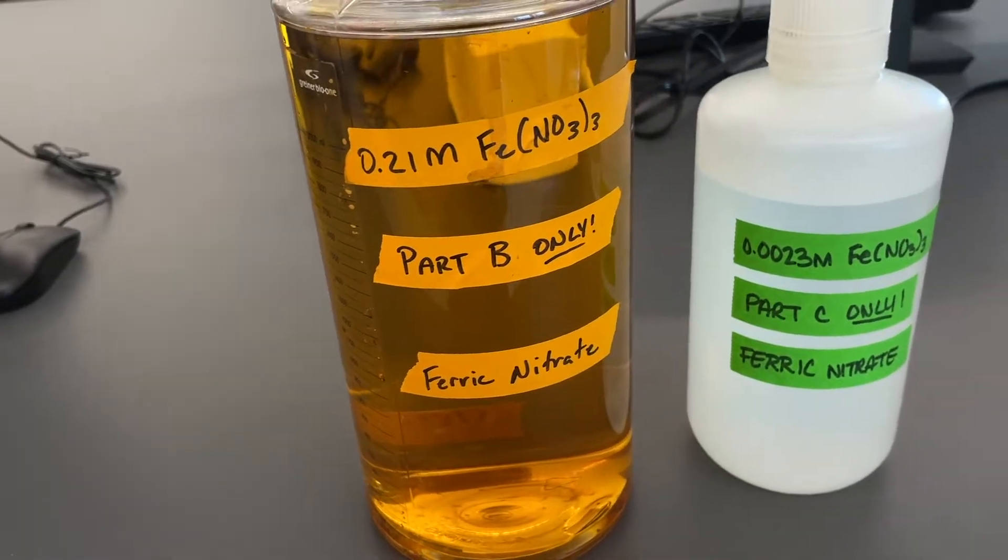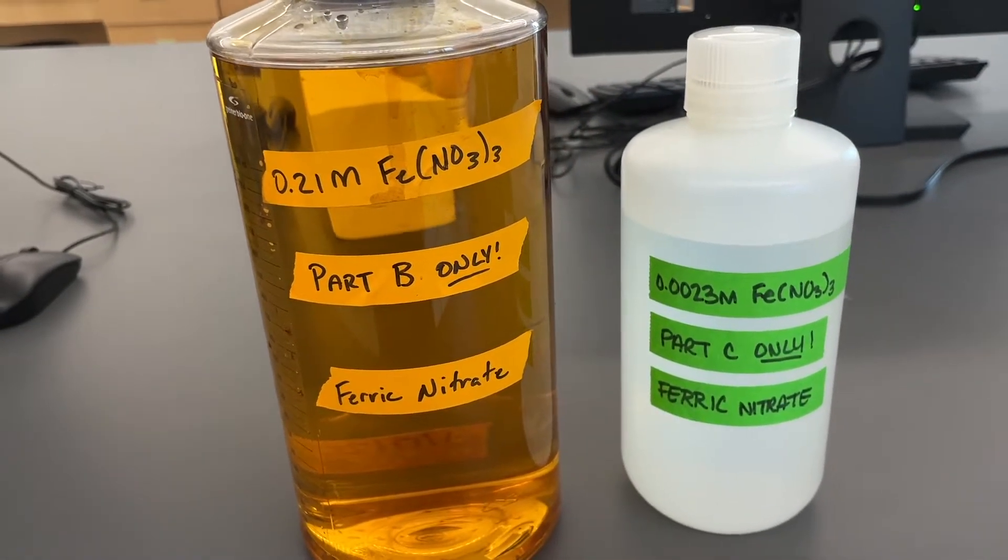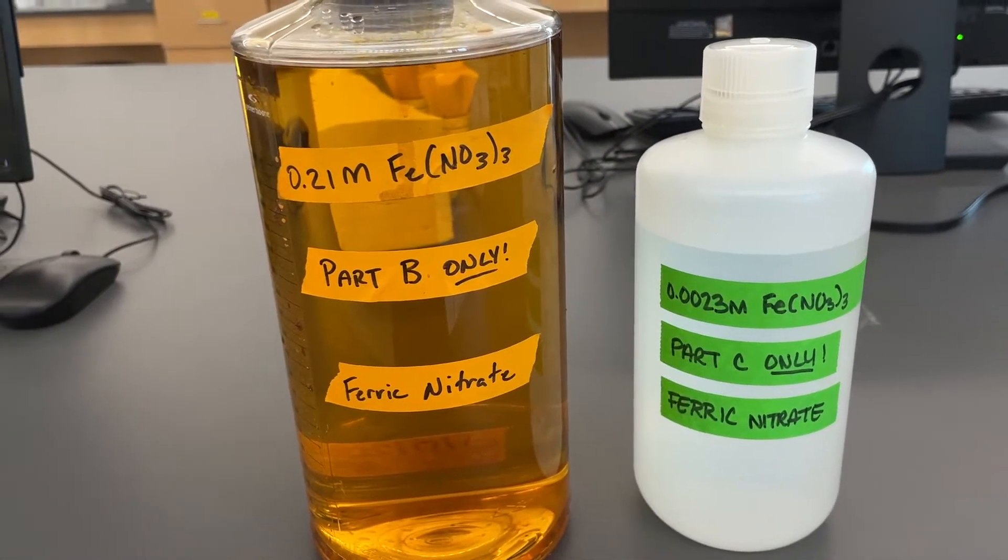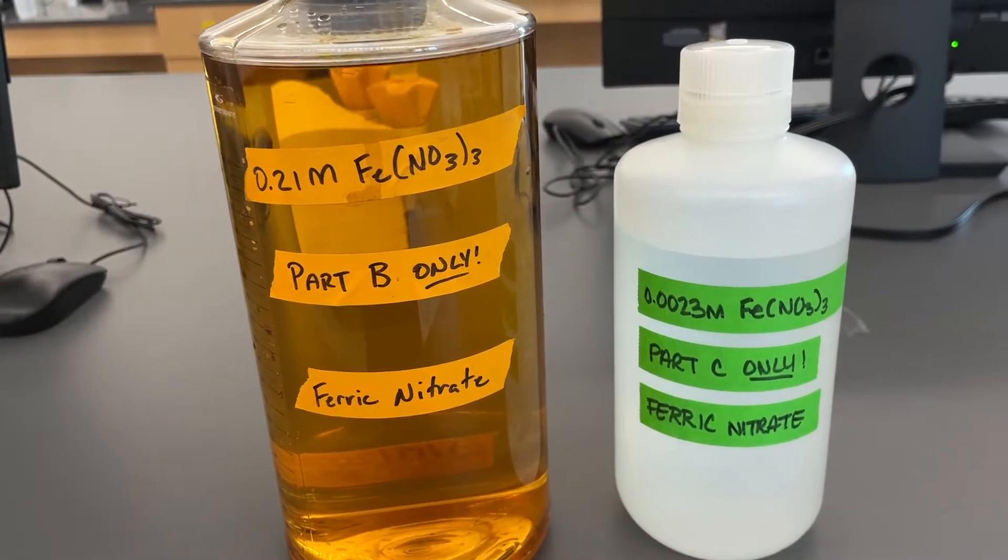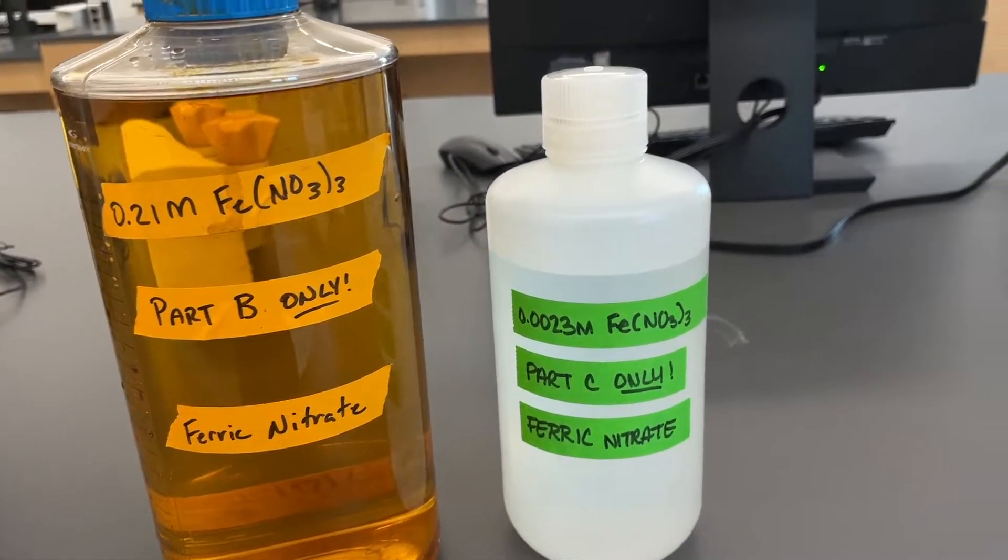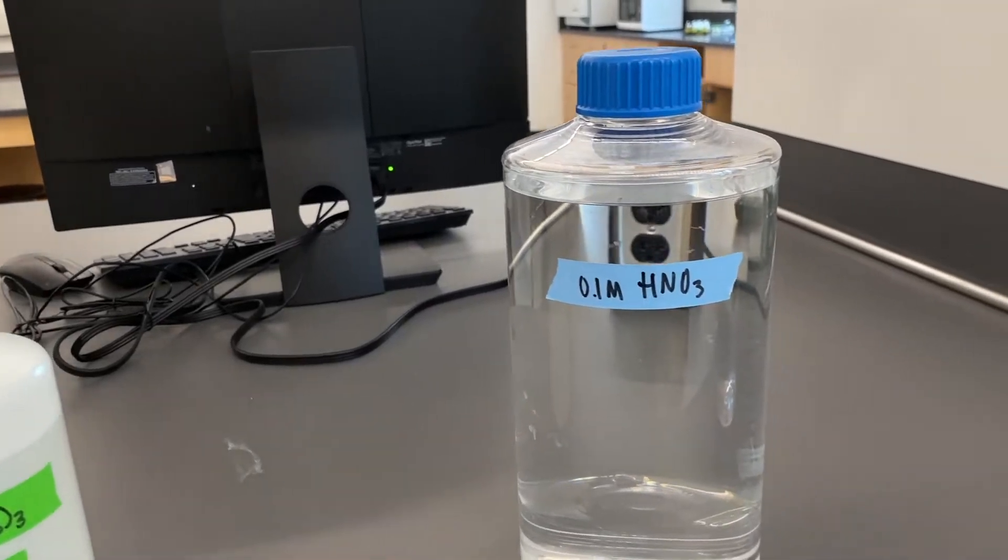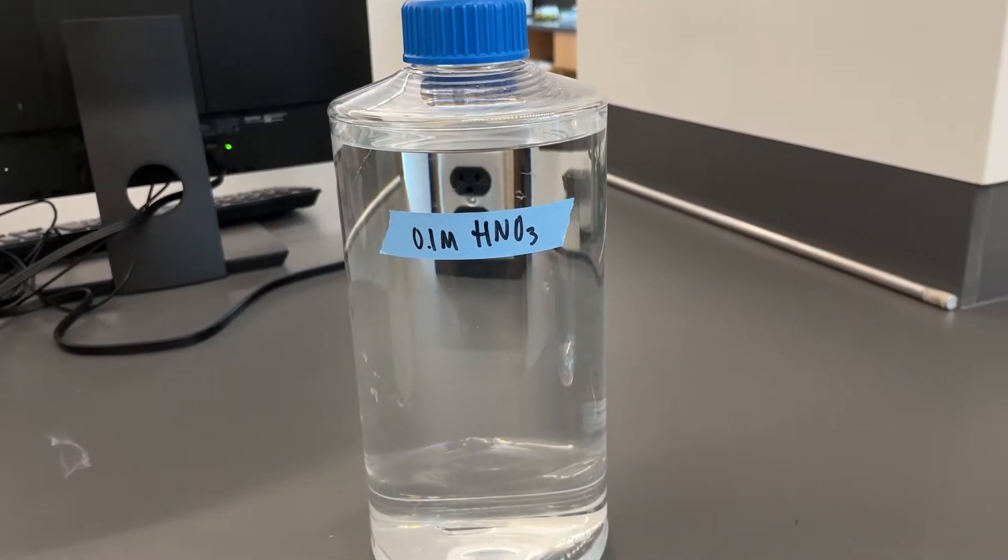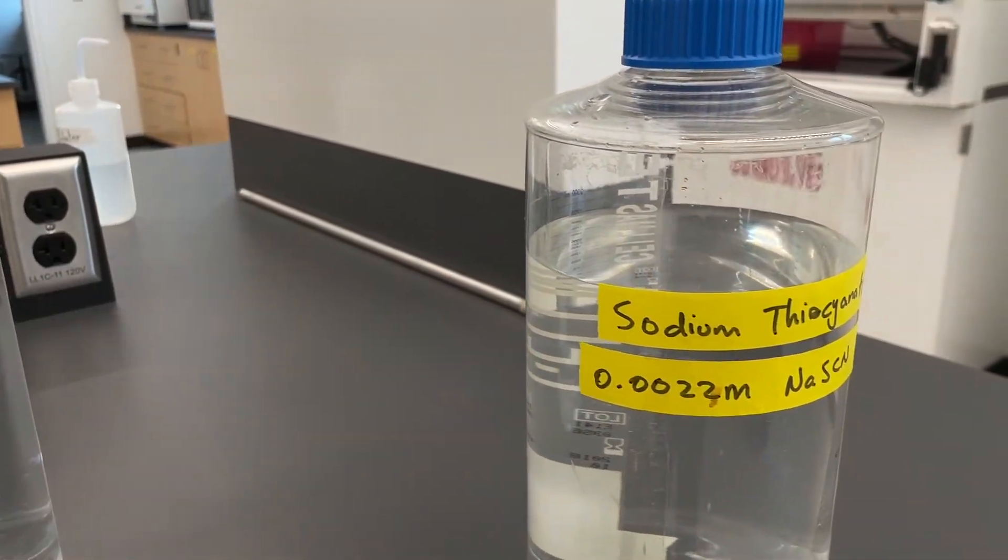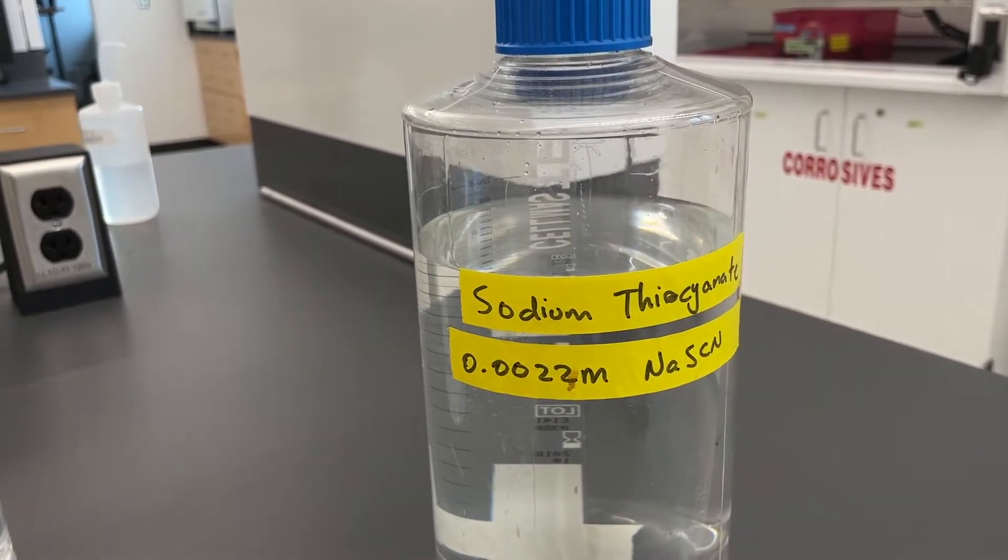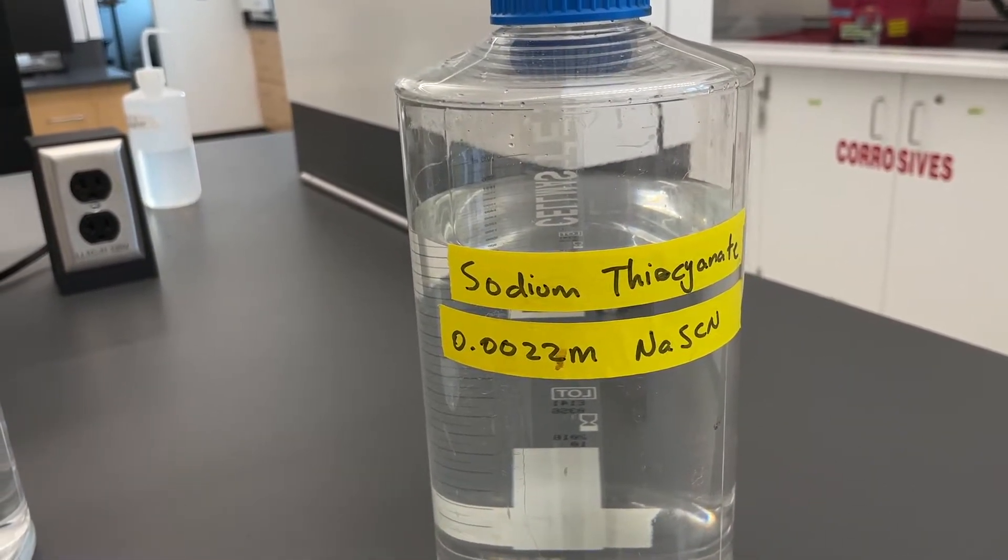To complete this experiment, we'll need several reagents. First we need ferric nitrate at two different concentrations. We have a more concentrated one for Part B and a more dilute one for Part C. We'll need a lot of nitric acid at 0.1 molar and then a fairly dilute sodium thiocyanate solution at 0.0022 molar.